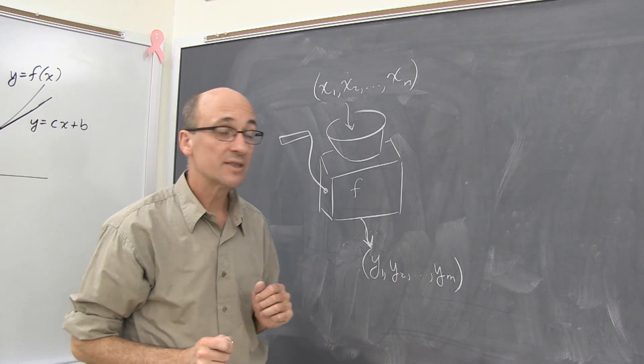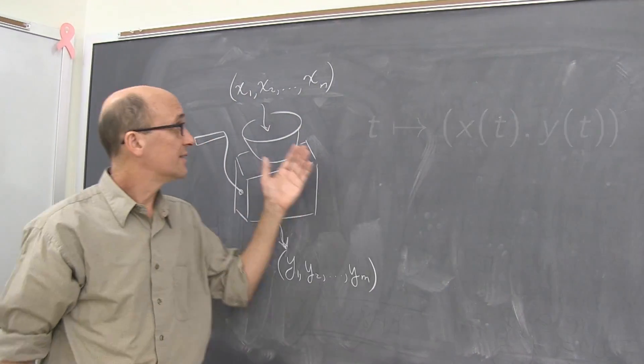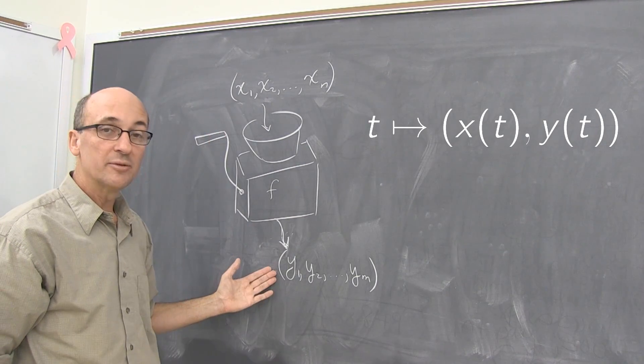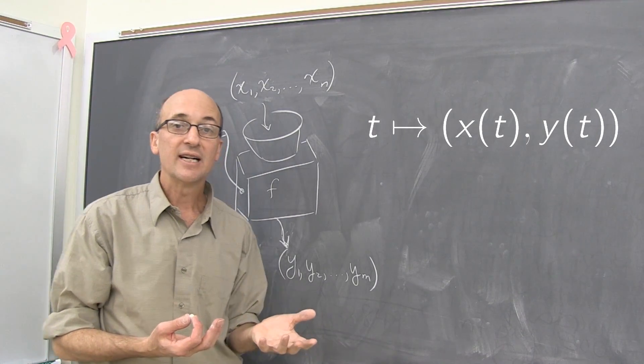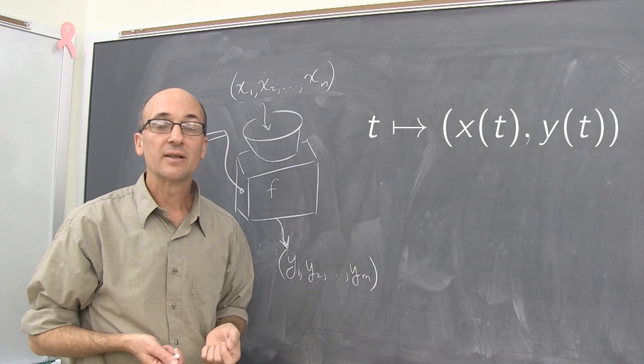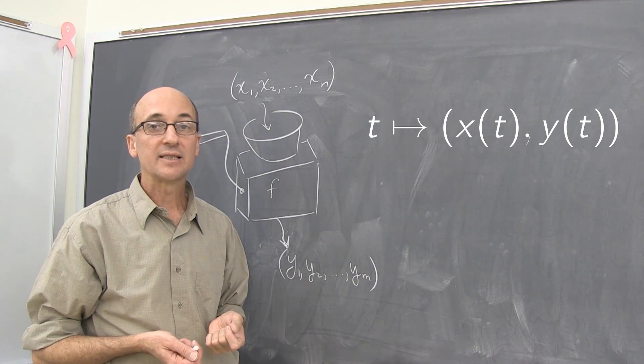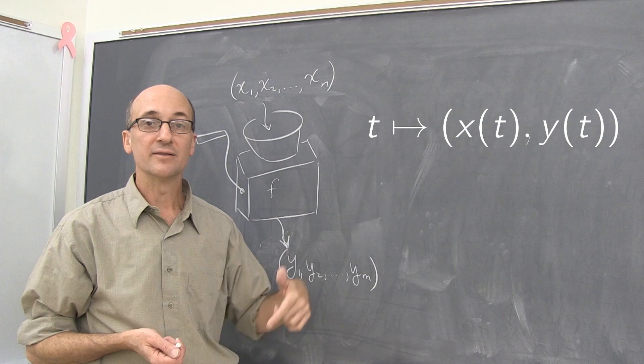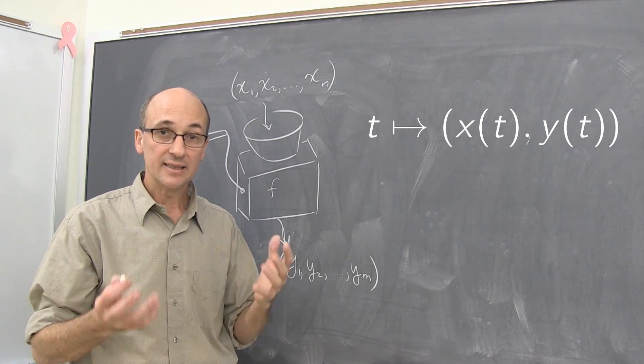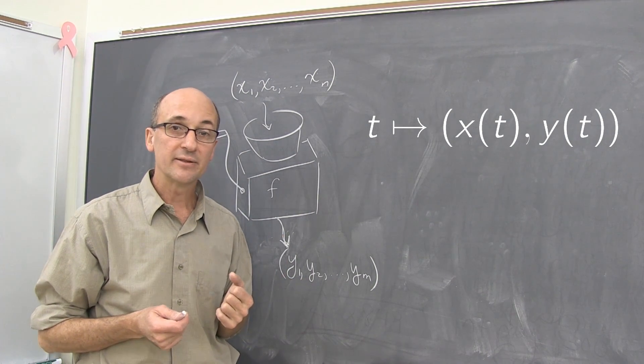Here are some examples. In the first example, there's a single input, multiple outputs. The single input represents time. The multiple outputs are the x and y coordinates of an object that's moving around in the two-dimensional plane. This is an example you meet in introductory physics.